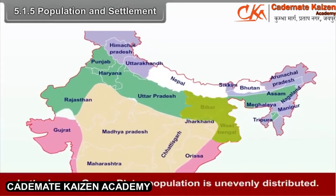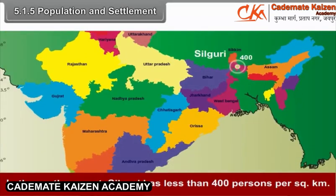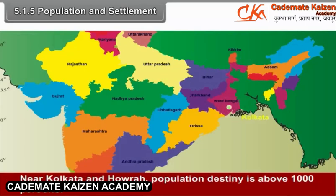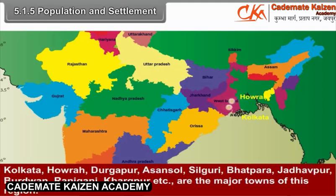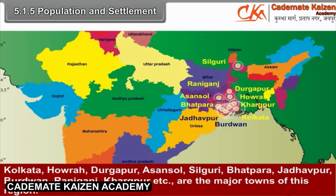In the lower Ganga Plain, population is unevenly distributed. In the northern part, Siliguri has less than 400 persons per square kilometer. Near Kolkata and Howrah, population density is about 1000 persons per square kilometer. Kolkata, Howrah, Durgapur, Asansol, Siliguri, Bhatpara, Jadavpur, Burdwan, Raniganj, Kharagpur, etc. are the major towns of this region.